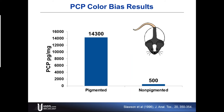You've heard me say this before — anytime you're testing a reservoir matrix where things tend to accumulate, we are not able to backtrack and determine time, dose, and frequency. There are too many variables. And hair color is one of the biggest variables that you will encounter.